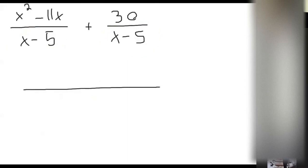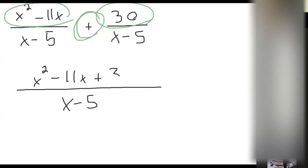We'll put them all over one common denominator of x minus 5, and then the adding part is where we're adding this binomial to this number 30. So this is going to be x squared minus 11x plus 30. I can't combine any of those. They're not like terms. So what do you think's next?